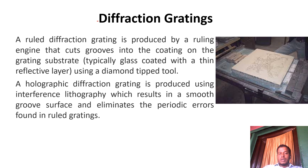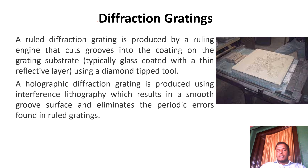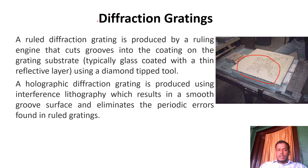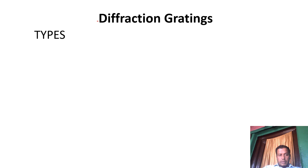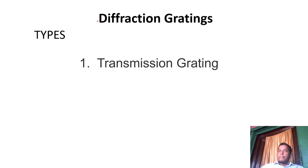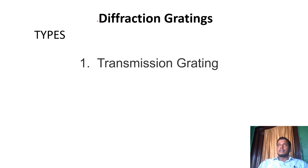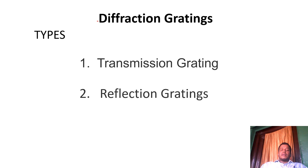Holographic diffraction gratings are produced by the interference of lithographic patterns, resulting in a smooth groove surface. Lithographic means using a flat stone or surface on which a picture is drawn. In this way, lithographic gratings are used. Depending on their transparency, diffraction gratings can be divided into two types: transmission gratings and reflection gratings. Transmission gratings allow part of the light to pass through while blocking other parts.